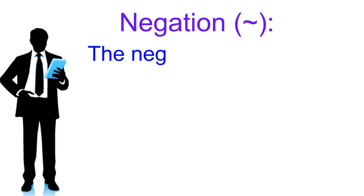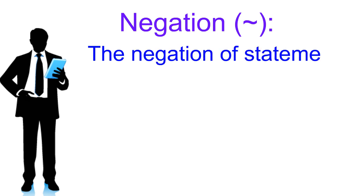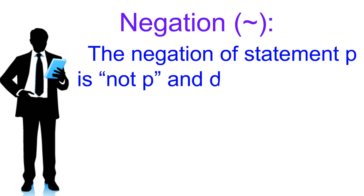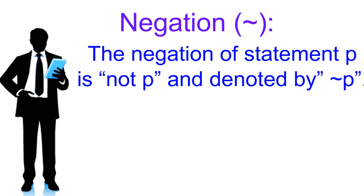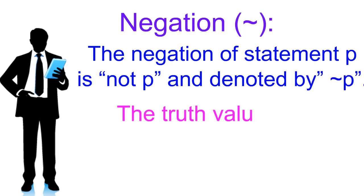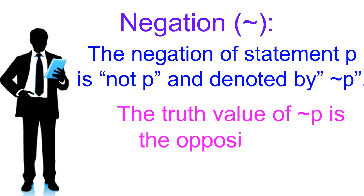So, let's begin with negation. The negation of statement P is 'not P', denoted by negation of P. The truth value of negation of P is the opposite of the truth value of P.